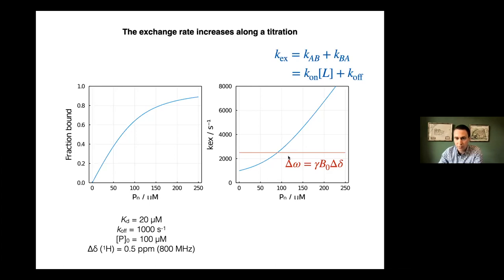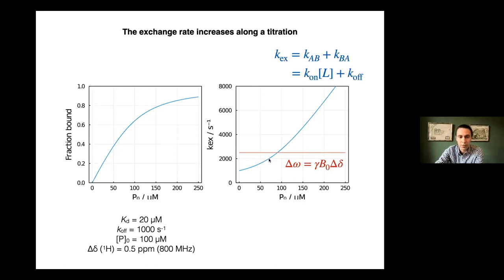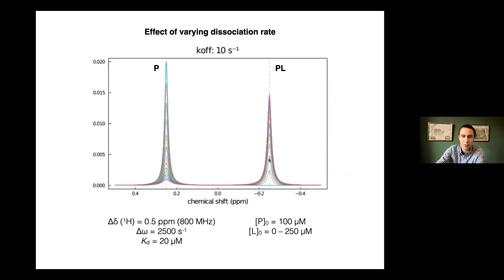We want to compare the exchange rate to the frequency difference between spin states — the delta omega. For example, a half a PPM difference in the proton at 800 MHz is about 2,500 per second. Depending on whether exchange rates are faster or slower than this, you get very different spectral appearances. This is fundamental to understanding chemical exchange in NMR titrations.